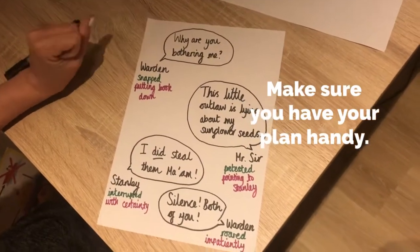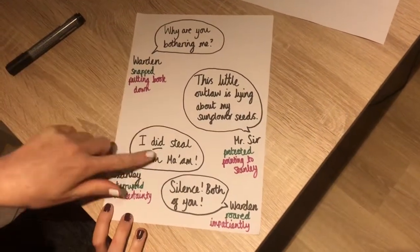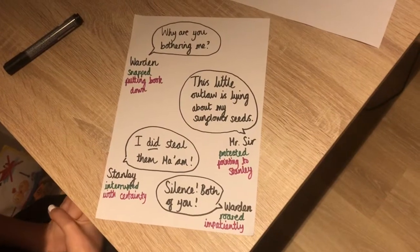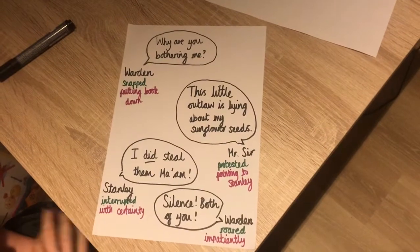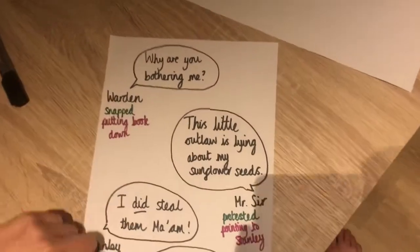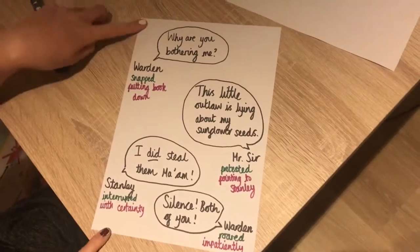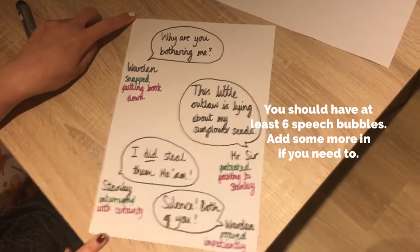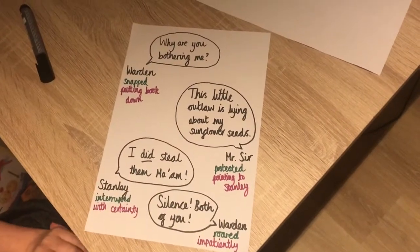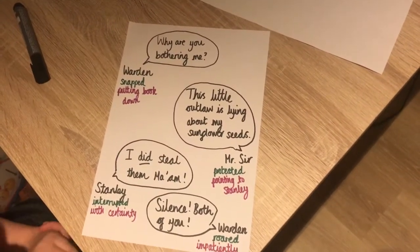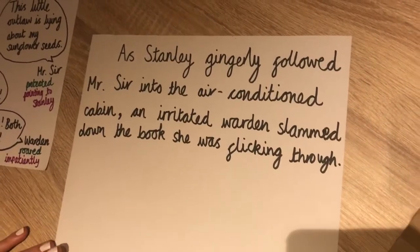Hi Year Five, for your lesson today you need your plan from yesterday. Yesterday you rewrote the conversation between the Warden, Mr. Sir, and Stanley. Your plan should look something like this, but hopefully a lot longer than mine because mine was just an example. Today you're going to be writing up this plan into an actual piece of dialogue that you might see in a book.